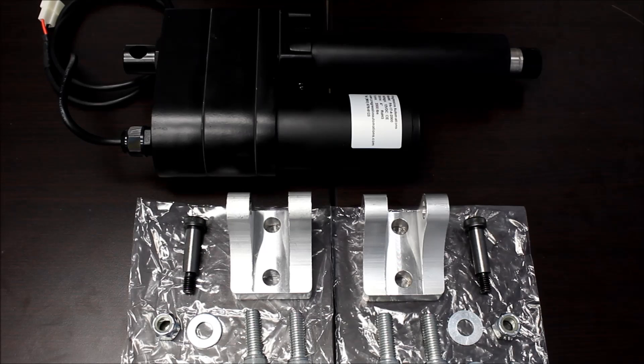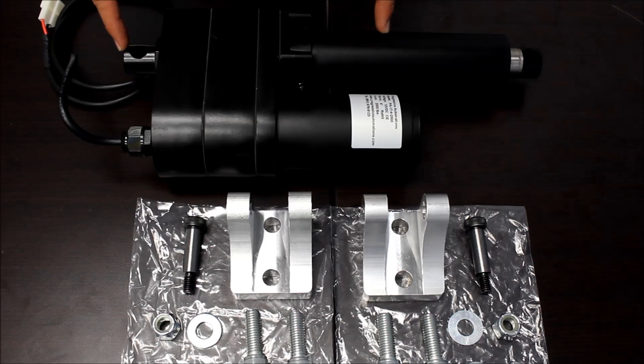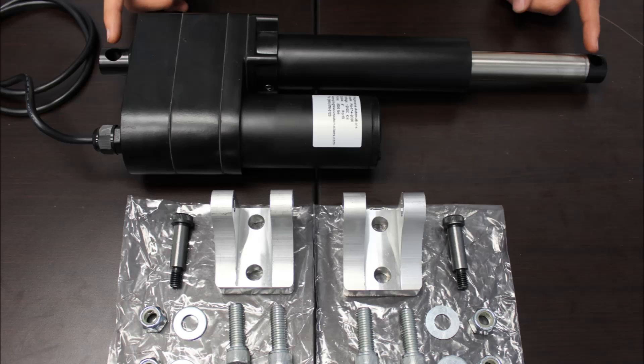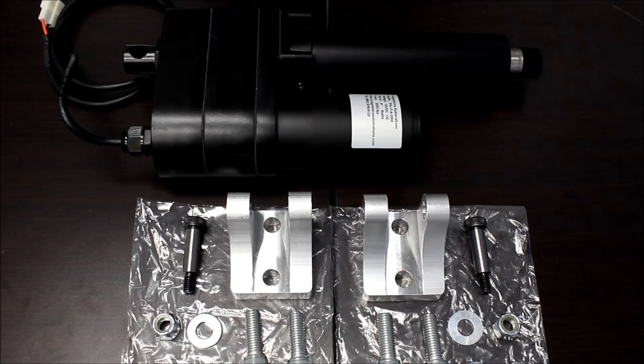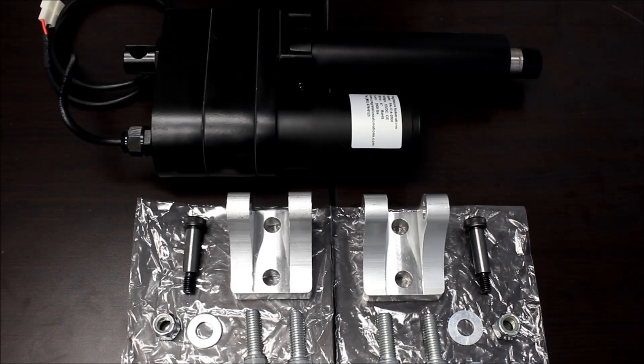The PA17 has a retracted length of 9.5 inches plus the stroke and an extended length of 9.5 plus 2 times the stroke length. The stroke sizes in stock range from 1 to 24 inches with more custom options available.